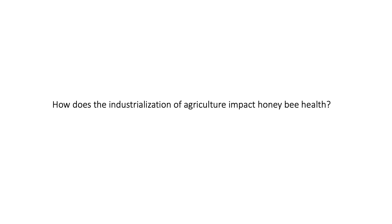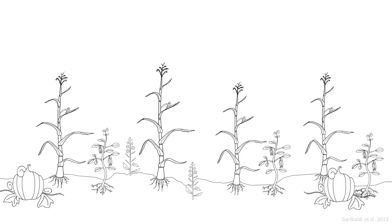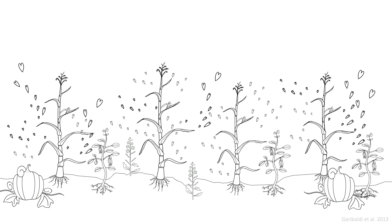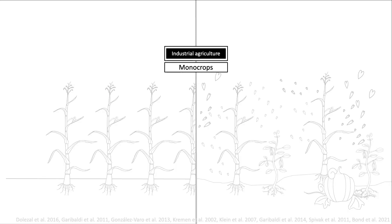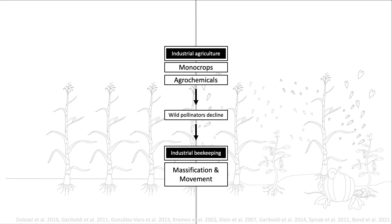How does the industrialization of agriculture impact honeybee health? In diversified farming systems, farmers rely primarily on wild insects and other animals to pollinate their crops. These pollinators nest in and around agricultural landscapes, and their pollination services support abundant food production. In industrial agriculture, monocrop landscapes provide limited nesting habitat and forage resources, and pollinators are exposed to an abundance of agrochemicals. As a result, as agriculture intensifies, the overall abundance and richness of wild pollinators in agricultural landscapes decreases, and commercial beekeepers bring in honeybees to meet crop pollination needs.